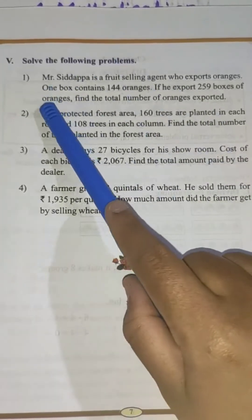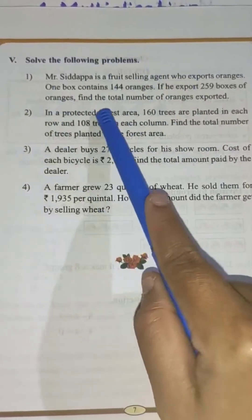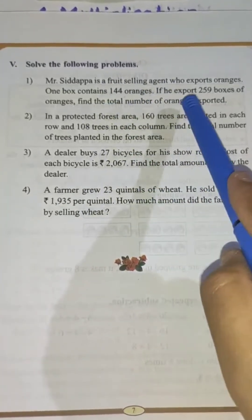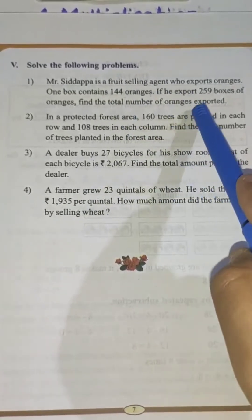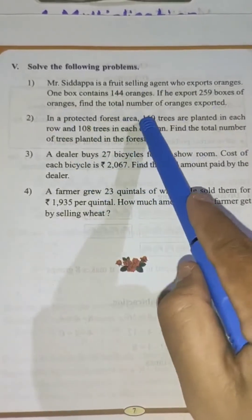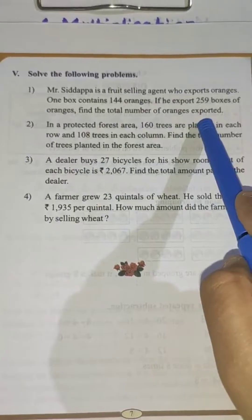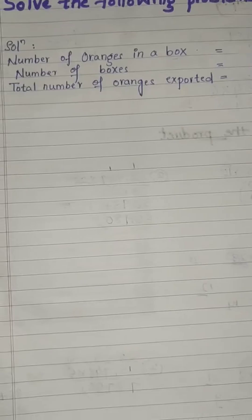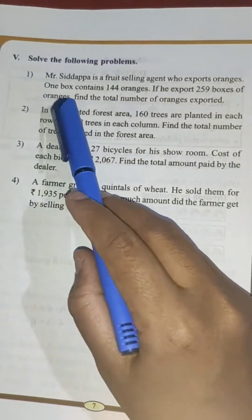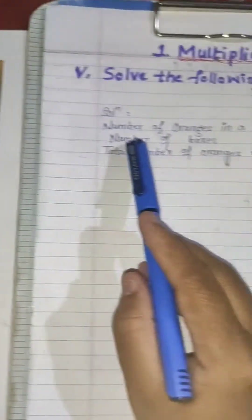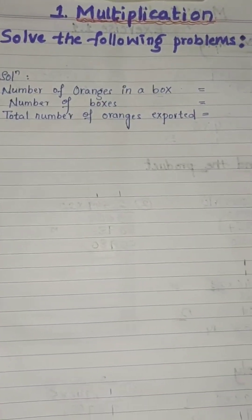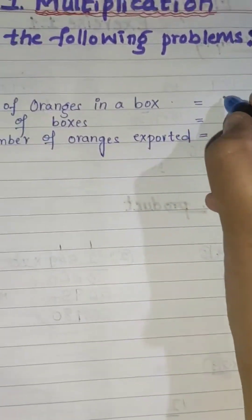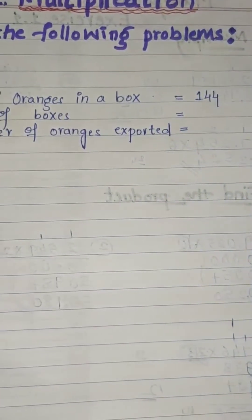Here you can see that each single box contains 144 oranges. The number of boxes exported is 259. You have to find the total number of oranges exported. So let's write the particulars. Number of oranges in a single box is 144.